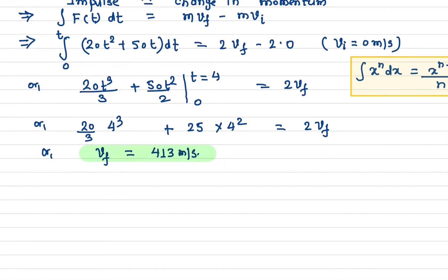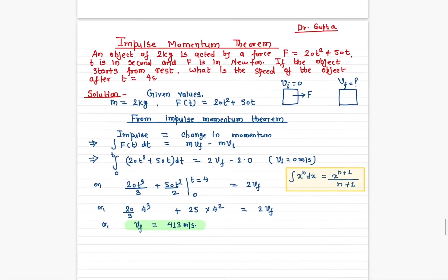First, we plug in time equals 4 seconds: 20 divided by 3 times 4³ plus 50 divided by 2 (which is 25) times 4² equals 2v_f. If you solve it, what you get is 413 meters per second.